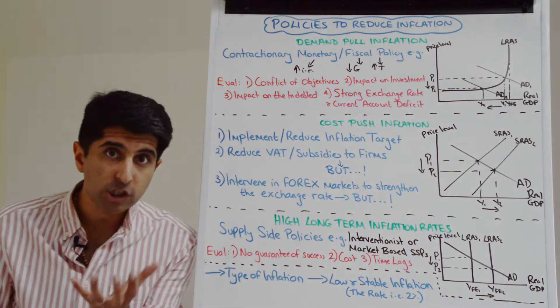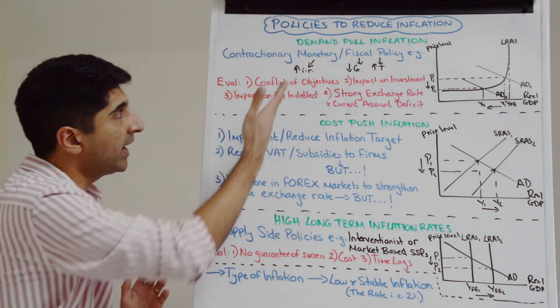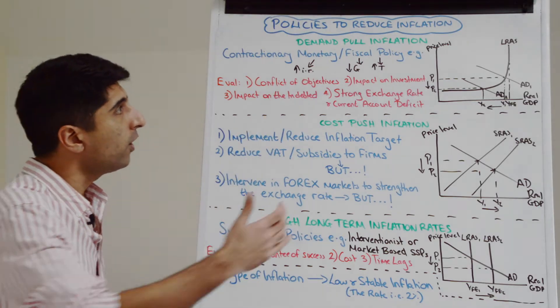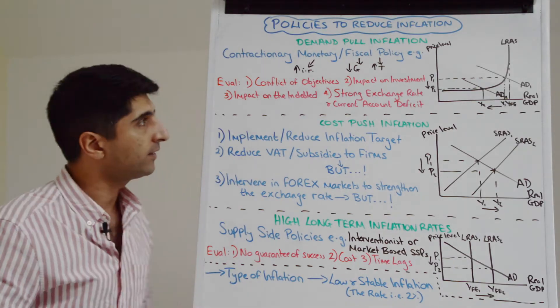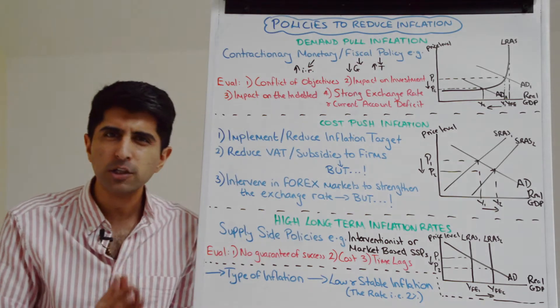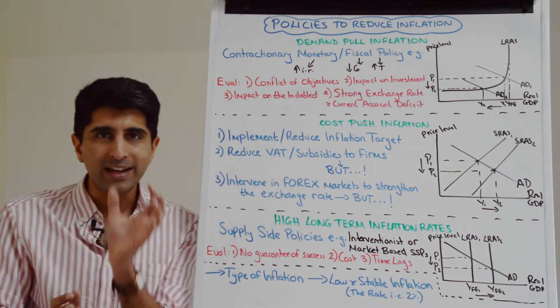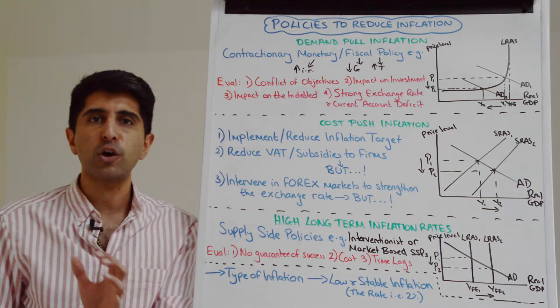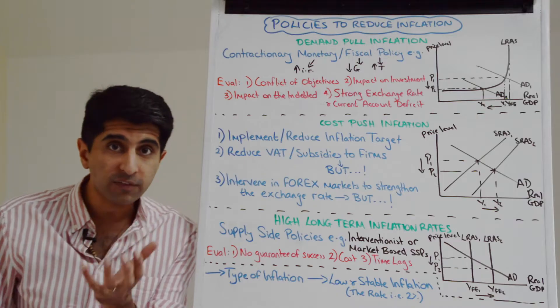We could use contractionary demand side policies - contractionary monetary policy via an increase in interest rates or contractionary fiscal policy via a cut in government spending or increases in taxation. But immediately we can already evaluate by saying contractionary fiscal policy to target inflation is very unlikely because we know that it's the central bank's job in the economy to target inflation, to use monetary policy to bring inflation towards target.